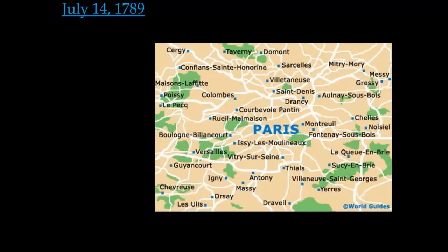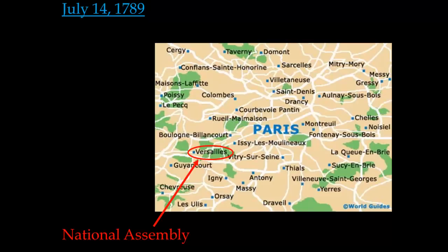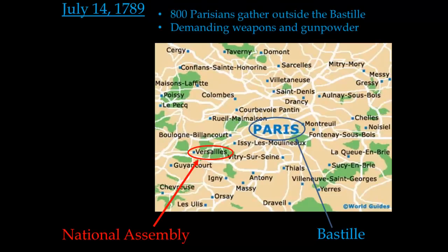We're going to be looking at July 14th, 1789. For the most part, we've been focusing on the National Assembly, which has been meeting in Versailles, which is a more rural city just outside of Paris. But now we're actually going to be looking at Paris itself. In Paris, there's a building known as the Bastille — a medieval prison located in the heart of Paris. On July 14th, 800 Parisians are gathered outside the Bastille, and we can think of them as being part of the third estate.